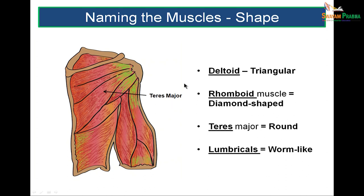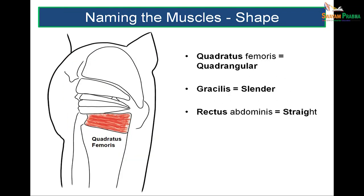Naming muscles by shape: the deltoid means triangle — so it is a triangular muscle. The rhomboideus muscle of the back means diamond-shaped. Teres major means round. The lumbrical muscles of the hand are slender and worm-like. Quadratus femoris is quadrangular. Gracilis on the inner aspect of the thigh is slender. Rectus abdominis is straight — rectus means straight.